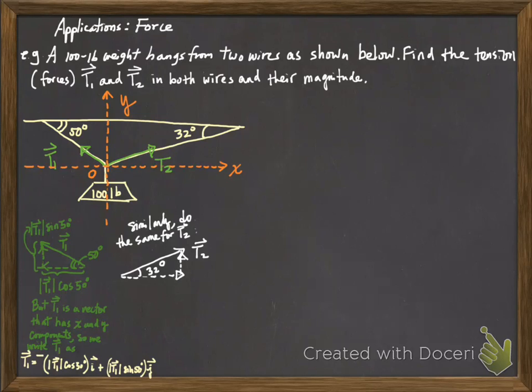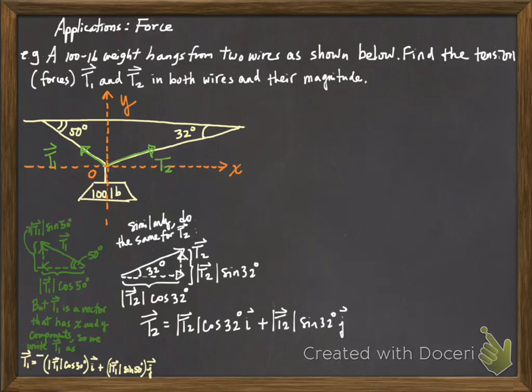Similarly, we can draw a picture for the T2 direction. And we have the corresponding length for each side of the triangle as shown here. So now the T2 vector can be written as its x component's magnitude, which is the magnitude of T2 times cosine of 32 degrees, times the direction, this is the direction without any magnitude associated with it, that's the direction of i, plus the y component's magnitude, which is the magnitude of T2 times sine of 32 degrees, and then multiplied by the direction j.